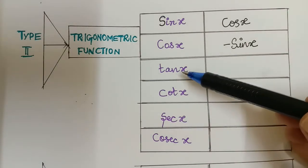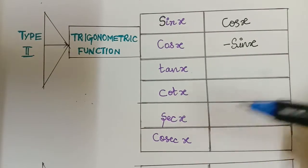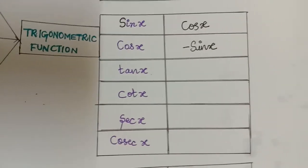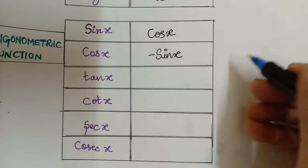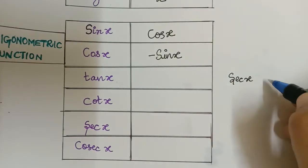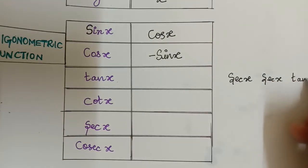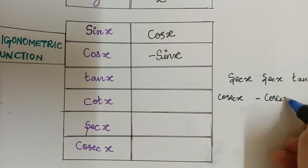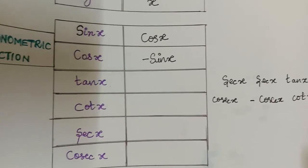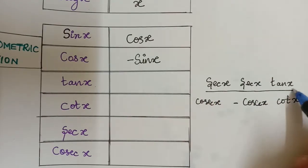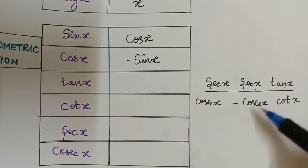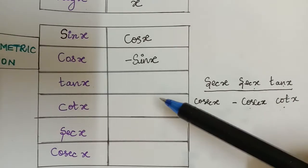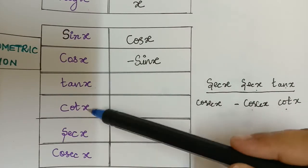To make it simple and handle it with some tricks, first write aside: sec x, sec x, tan x — and then also write cosec x, minus cosec x, cot x. In the first row write sec x, sec x, tan x, and in the second row write cosec x, minus cosec x, cot x. Using this we shall find the differentiation of the remaining four trigonometric functions.